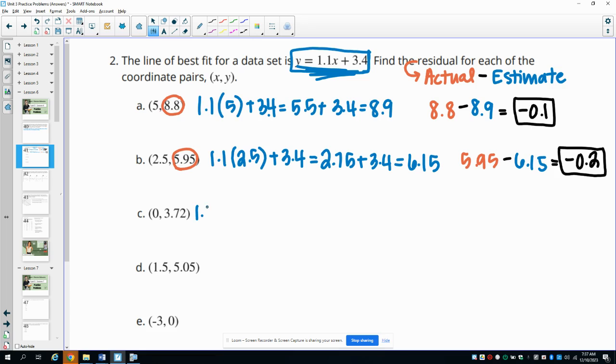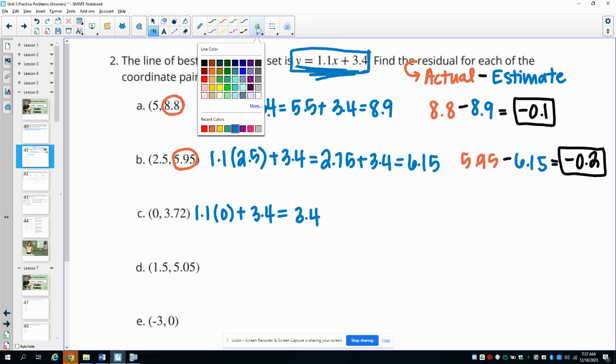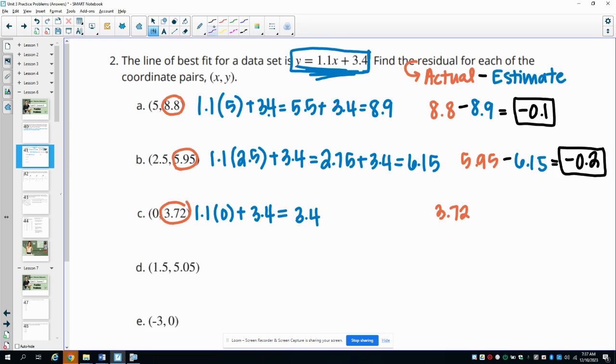Part C, 1.1 times 0 plus 3.4. 1.1 times 0 is 0 plus 3.4 gives us 3.4 as our estimate. So then we'll take our actual value, 3.72, and subtract our estimate of 3.4, which gives us our residual of 0.32.